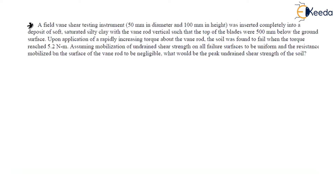First read the question. A field vane shear testing instrument — that means this question is related to the vane shear test. It is given as having a diameter of 50 mm. So for the vane shear test, the diameter is given as 50 mm, and the height of the vane shear is given as 100 mm.